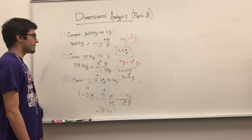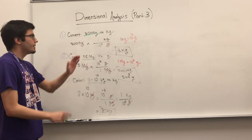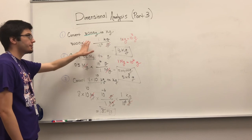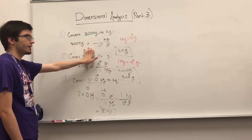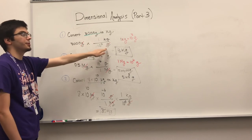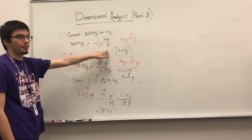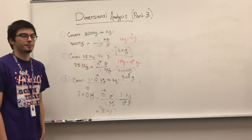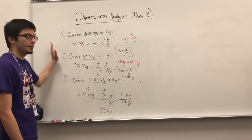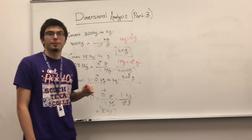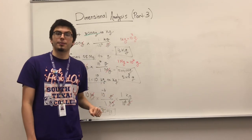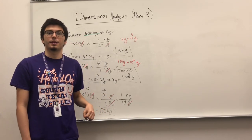Recap: acknowledge what you're given, multiply by your conversion factor, make sure your units cancel, and you're done. This is how you do these conversions. We'll do some more complicated conversions in the next video. Thank you.